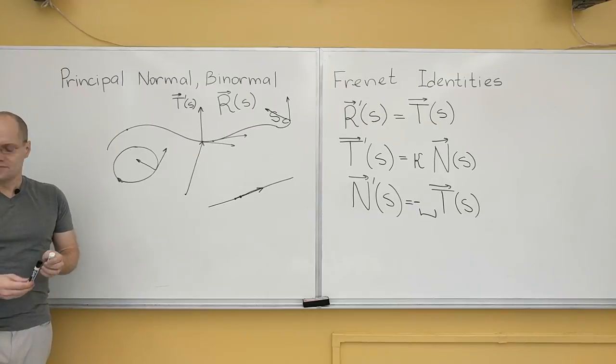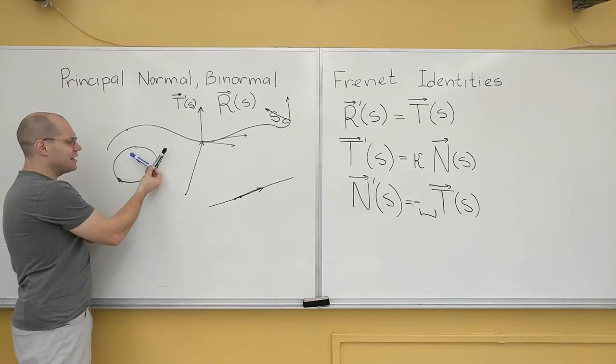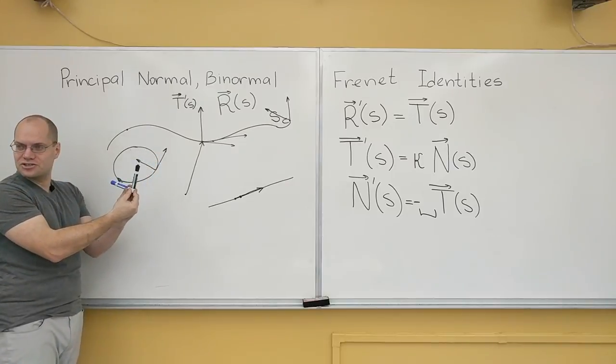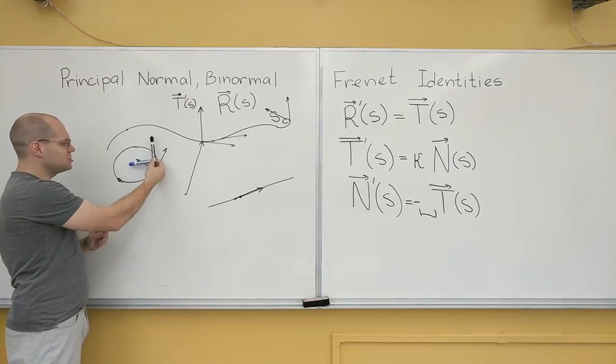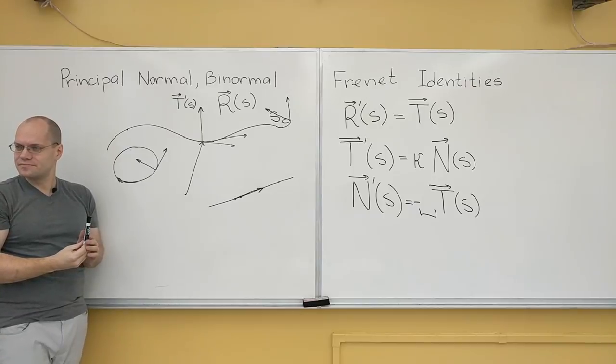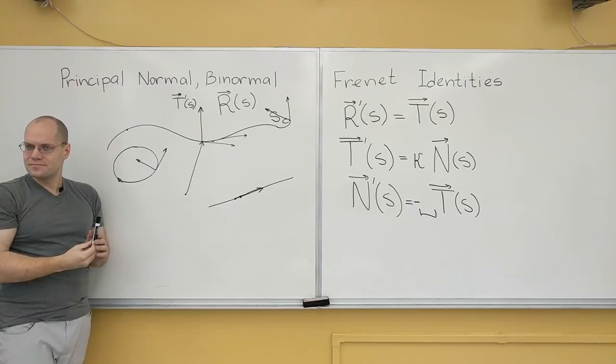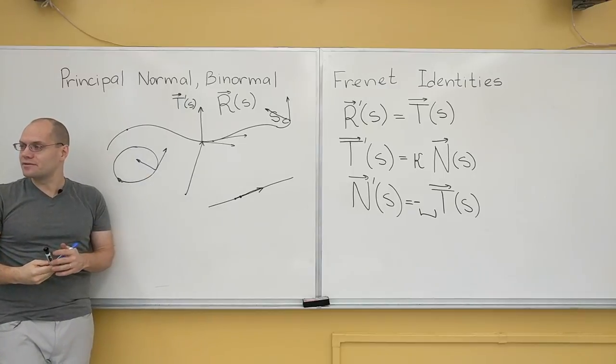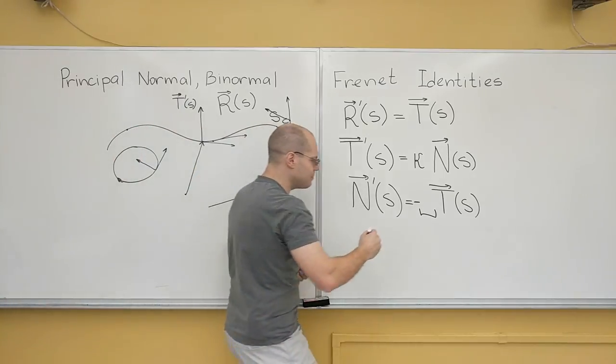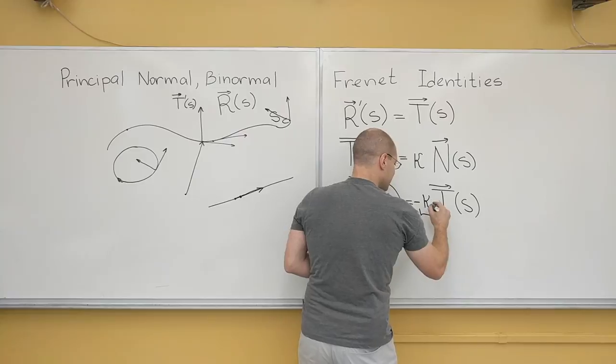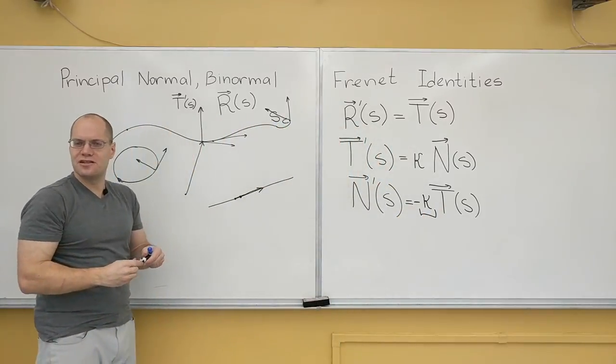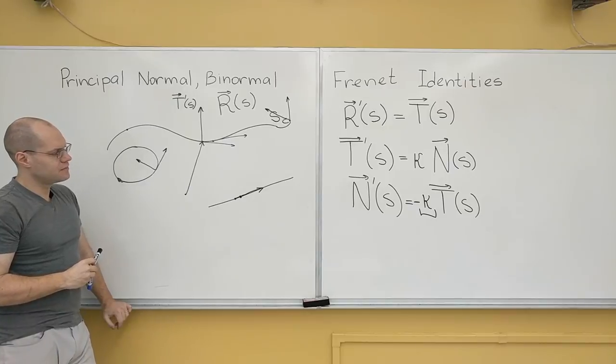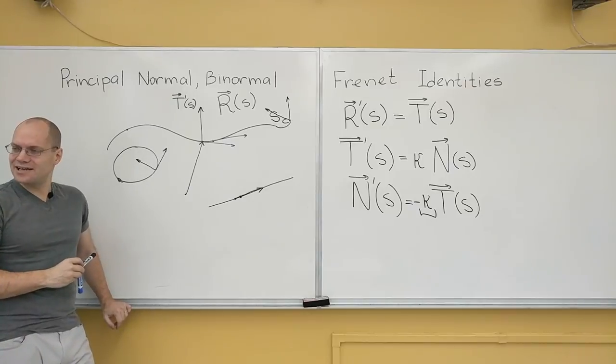But what's the rate? Well here, you can observe that at whatever rate the tangent changes, because they're locked in this relationship, the normal changes at the exact same rate. And so that coefficient of proportionality will also be kappa. So this will be minus kappa, because there are these couple of vectors locked in their relative position. Okay, minus kappa n. Isn't that a nice relationship?